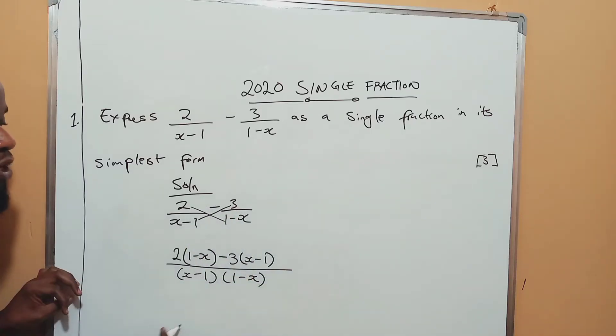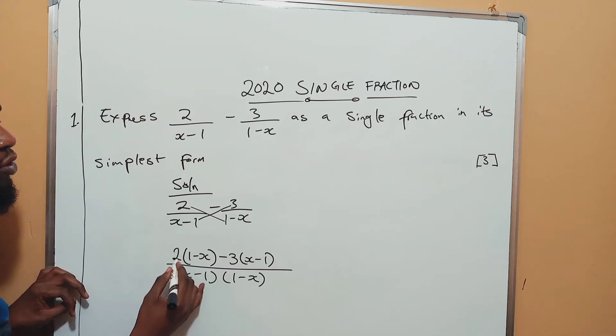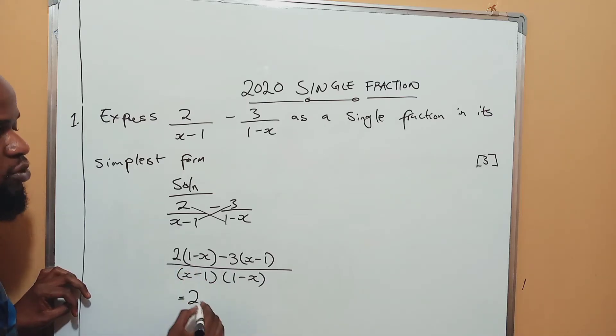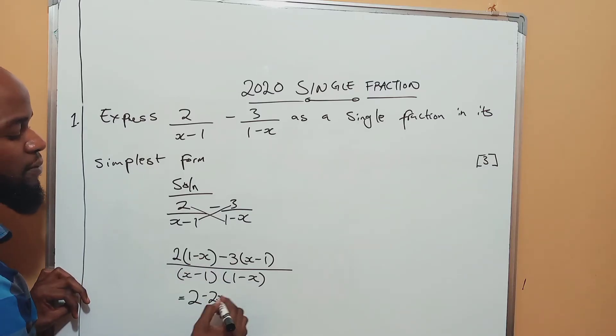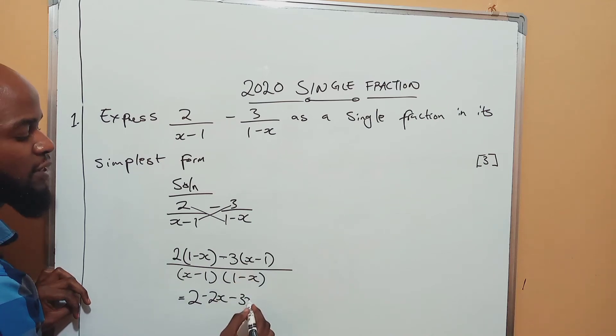What do we have here? We continue. Two times 1 is 2, brackets mean multiplication, and 2 times negative x is negative 2x. Negative 3 times x is negative 3x. Negative times negative is positive 3.